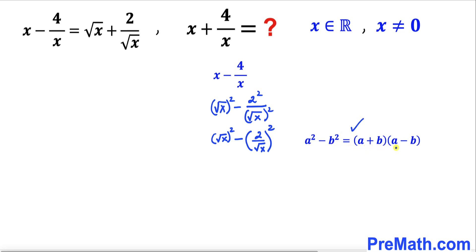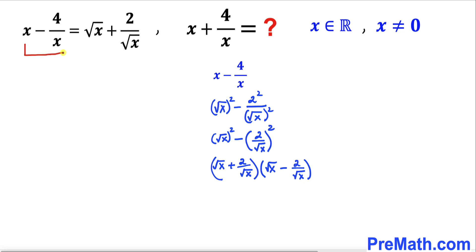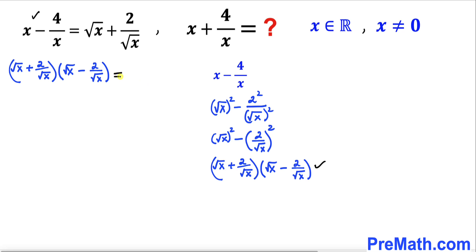Let's recall the identity: a squared minus b squared equals (a plus b) times (a minus b). Applying this, I can write the left hand side as (√x plus 2/√x) times (√x minus 2/√x). So the left hand side has been converted into this factored form and it now equals (√x plus 2/√x) on the right hand side.